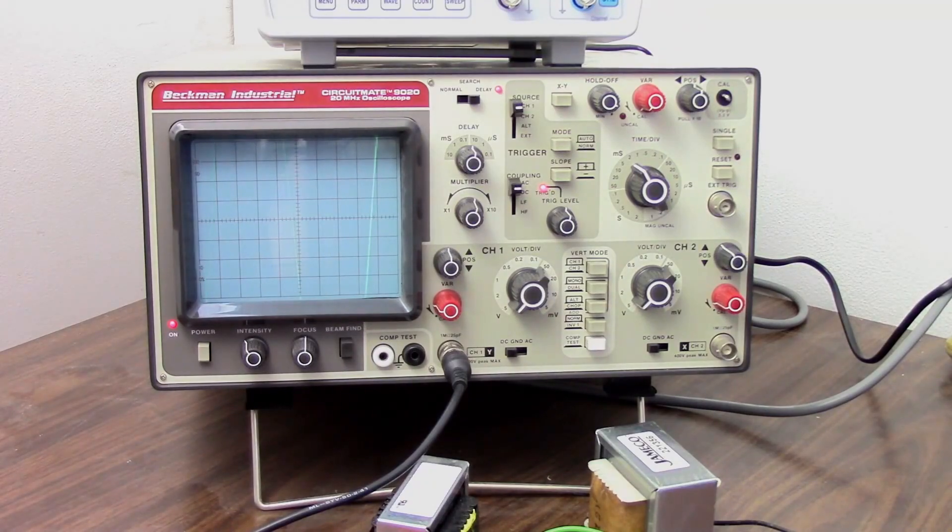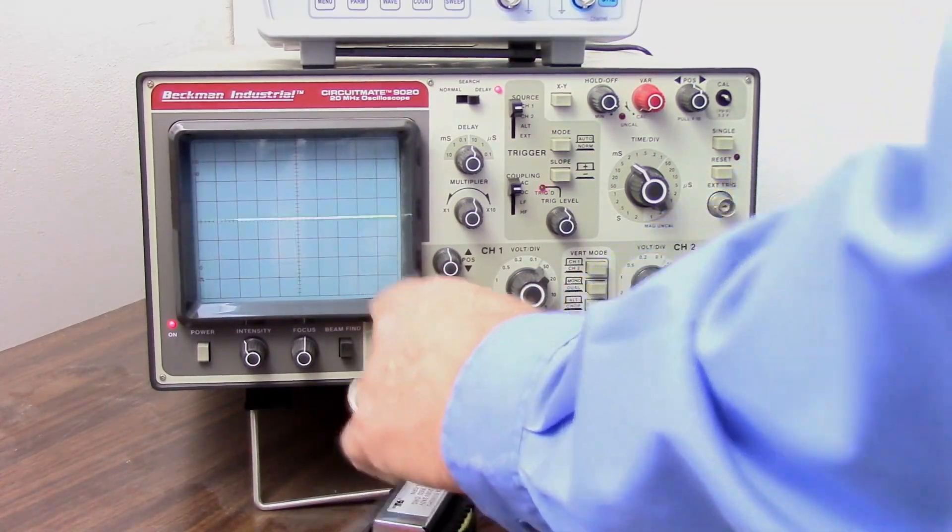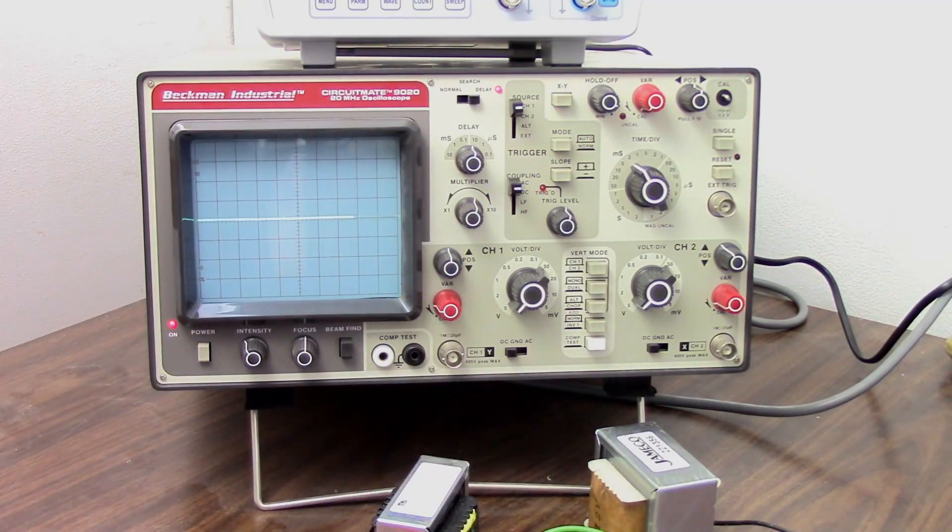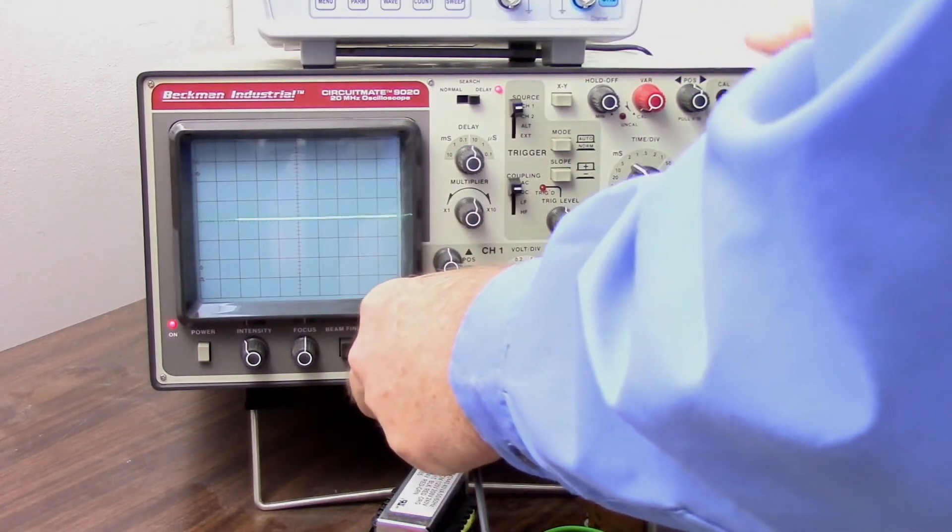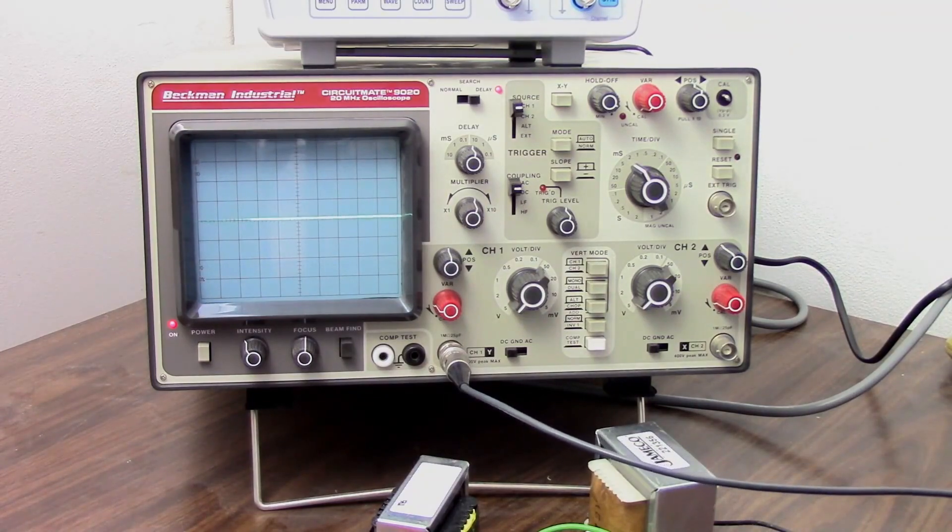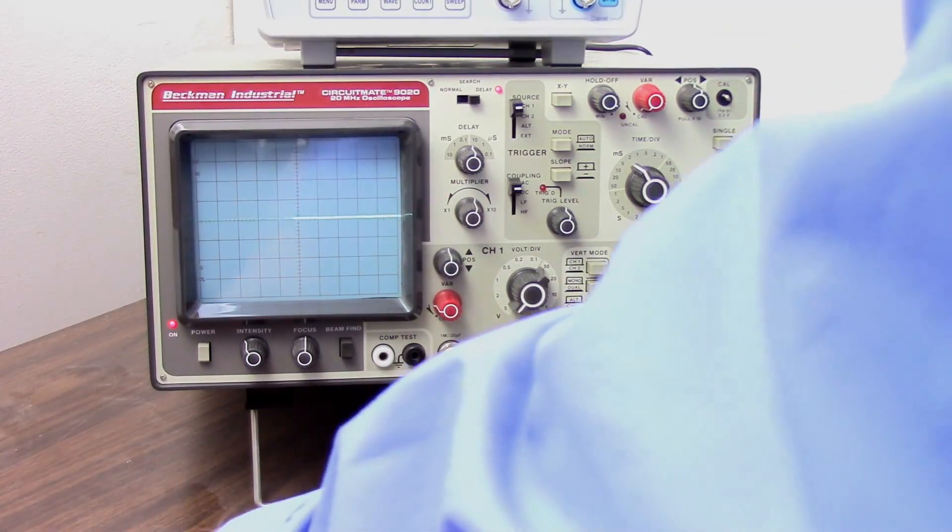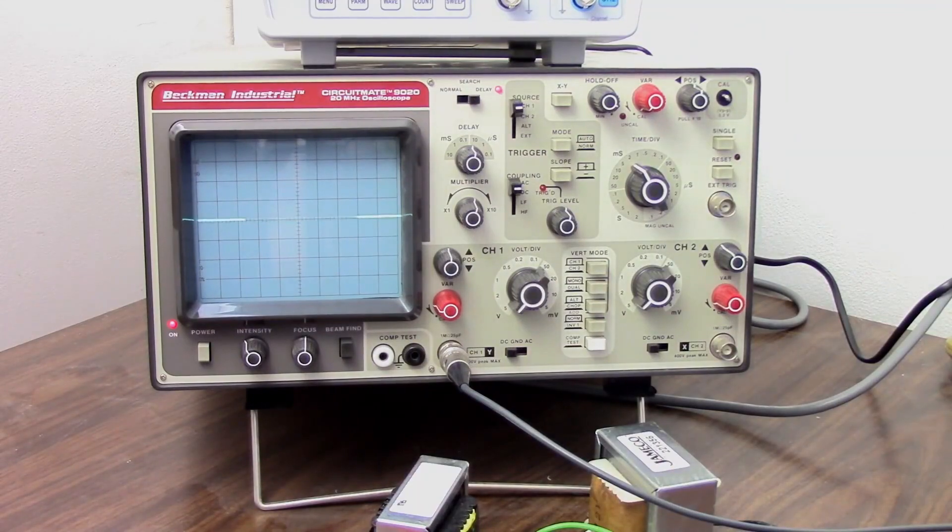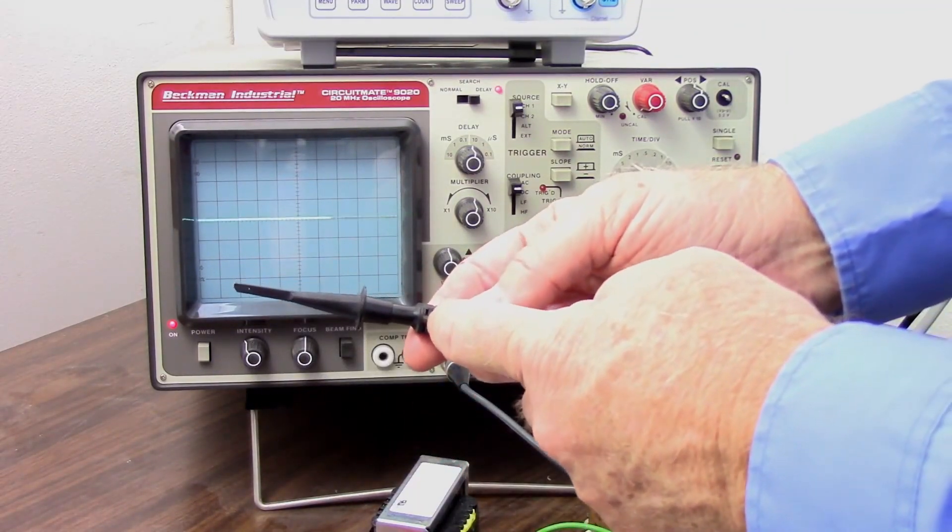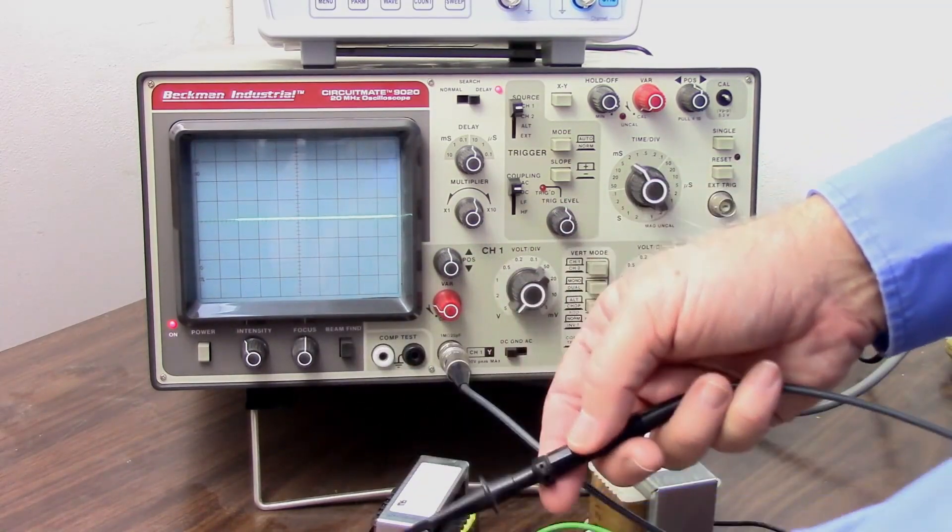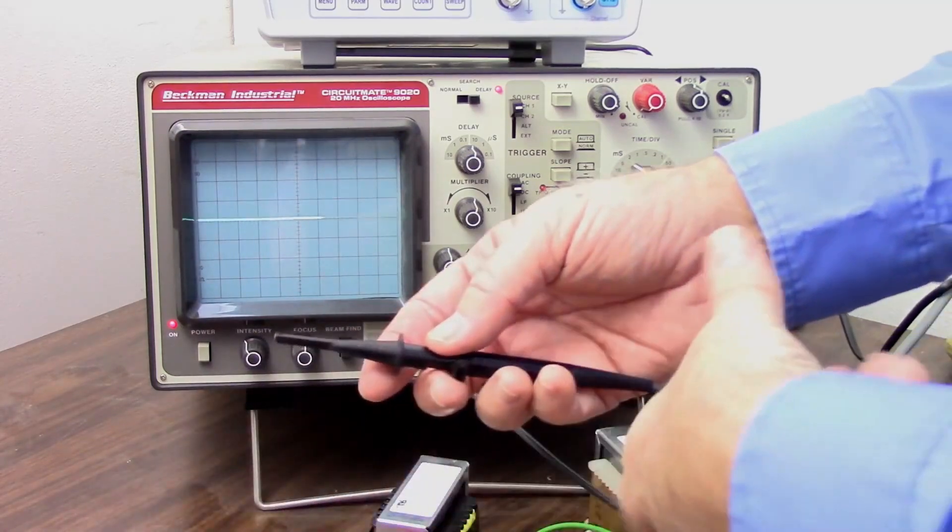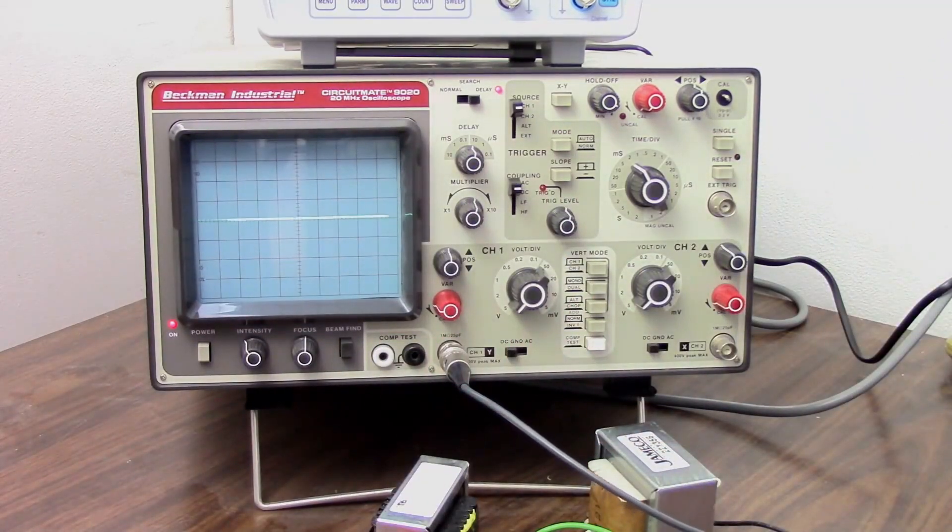Well, we can use a times ten probe. So let me take this regular probe off and let's put in a times ten probe. Now, these times ten probes normally have a ground lead hooked up right here. And I could hook my ground and my lead right up there. But I took this off just to reduce the clutter. Well, I'm lying. I can't find it. But we can ground it another way.